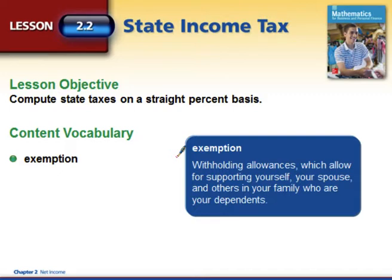Just understand that we're comparing one paycheck versus a yearly amount of paychecks. An exemption is a withholding allowance, just like federal income tax, which allows for supporting yourself, your spouse, and others in your family who are your dependents — your children or anybody that you might have guardianship over.